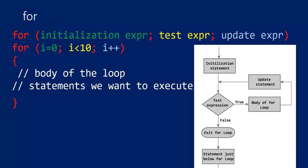Here is the flowchart. The first step is the initialization statement — here you can see i equal to 0, so that is the initialization statement.